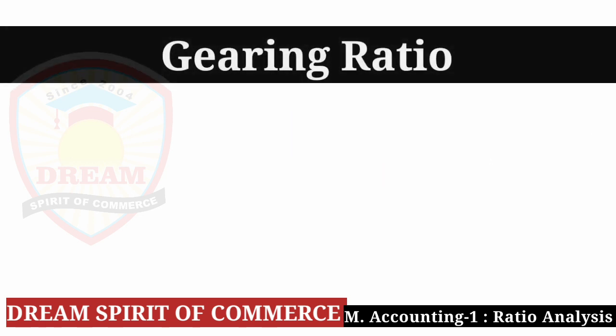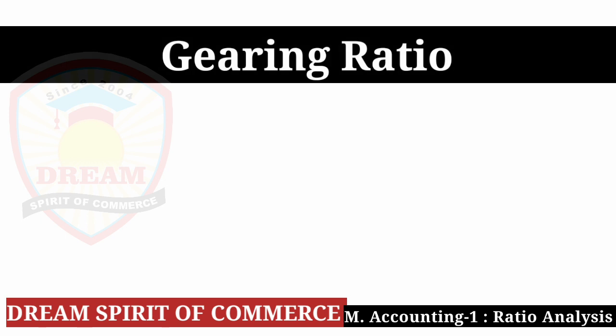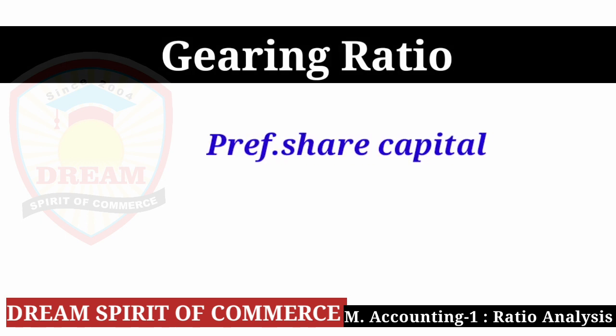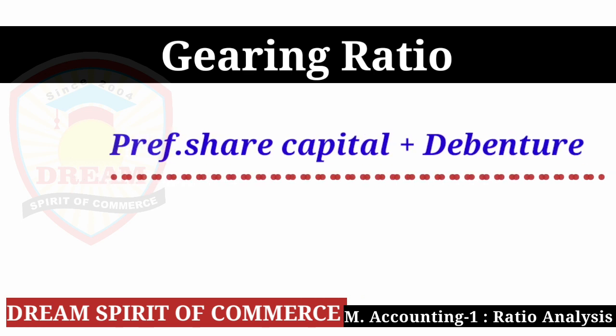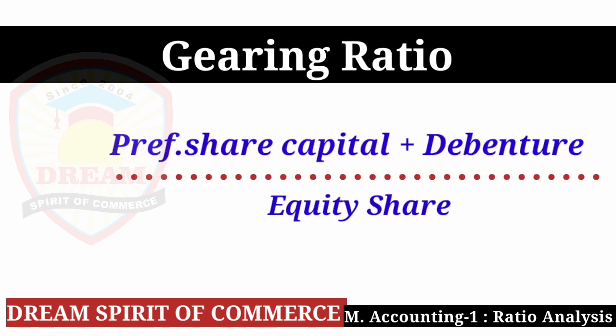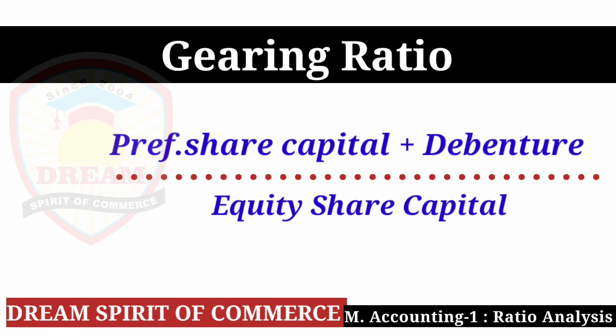Now Gearing Ratio: Gearing Ratio equals Preference Share Capital plus Debenture divided by Equity Share Capital. There is also a second formula: Preference Share Capital plus Debenture divided by Equity Share Capital plus Reserves. You can apply either formula. If the sum doesn't specify, use either one to find the Gearing Ratio.